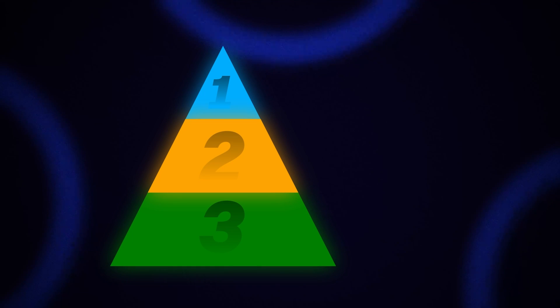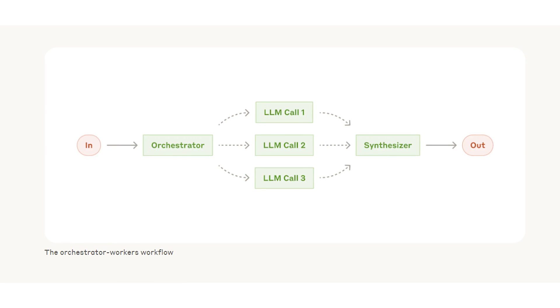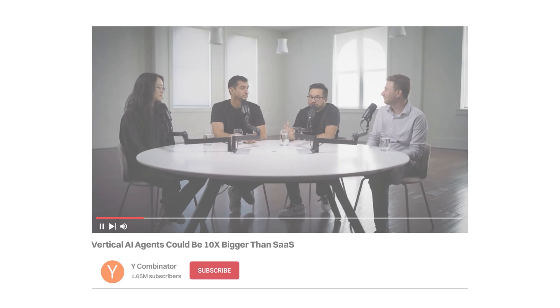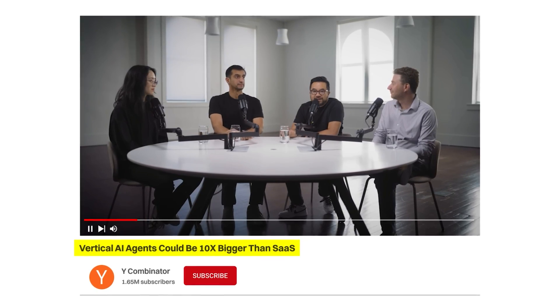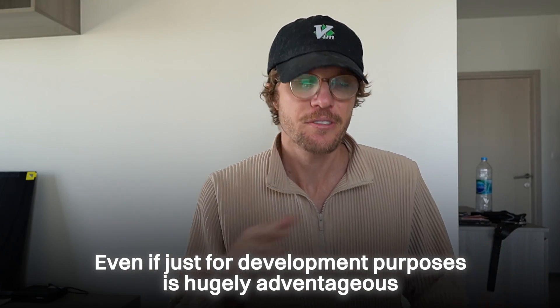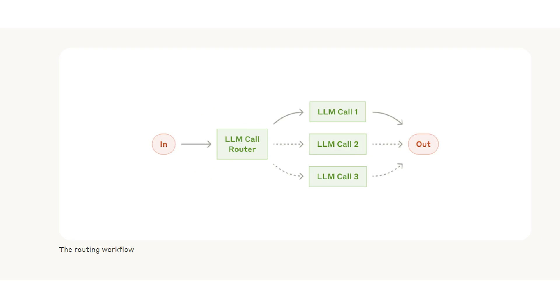Coming back to AI as a new platform, I see three levels. The highest level is LLM calls and orchestrating them into complex workflows — agents — which Y Combinator has said could be 10 times bigger than the entire SaaS industry. Whether or not you believe that, agents are going to be part of the future, and being able to build them locally, even just for development purposes, is hugely advantageous.